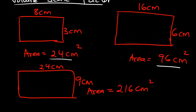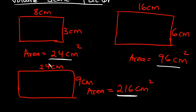What about the other one? We multiplied the lengths by 3 — 8 × 3 and 3 × 3. The area was 24 cm² and now it is 216 cm². That means the area was multiplied by 9. So do you see a relationship there?